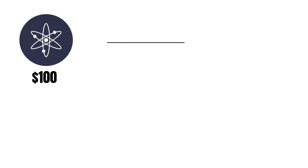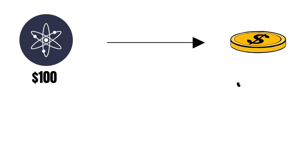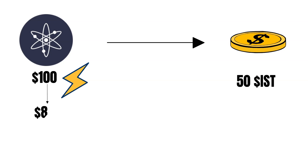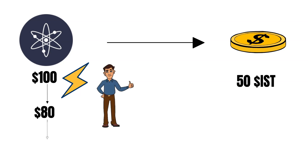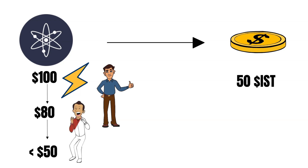If the value of the collateral you initially deposited falls below the collateralization ratio, the protocol liquidates your loan. For example, let's say you have $100 worth of ATOM. You could deposit this ATOM to take 50 IST out of the Inter Protocol. If your ATOM position crashes to $80, nothing will happen because you over-collateralized your loan for such an event. However, if the ATOM value is about to fall below $50, the protocol liquidates your loan. Of course, you would still have your 50 IST if you did not sell it, but your deposited ATOM position would be gone.